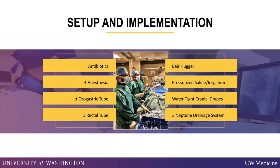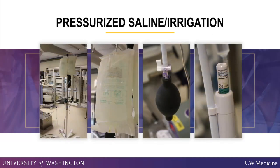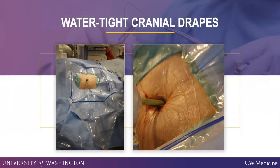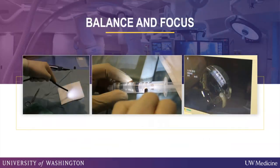Before we perform any of these interventions, whether in the biliary tree or outside, we give antibiotics. Anesthesia can be used but is not required. In the past we typically placed orogastric and rectal tubes to prevent electrolyte derangements; some centers still do this. We place a bear hug around the patient to keep them warm. For reusable scopes we use pressurized saline; the SpyGlass Discover has its own irrigation system. We also place cranial drapes on the patient to manage fluid, and we white balance and focus the reusable scopes before starting. The SpyGlass Discover and other single-use scopes don't require this step.